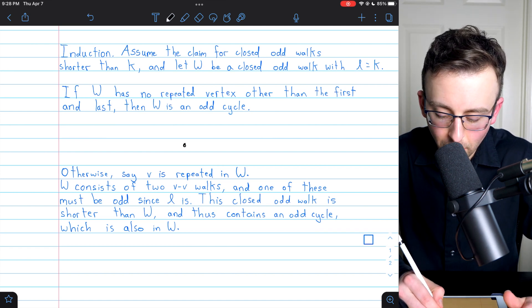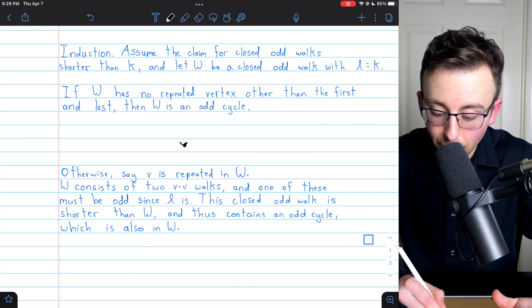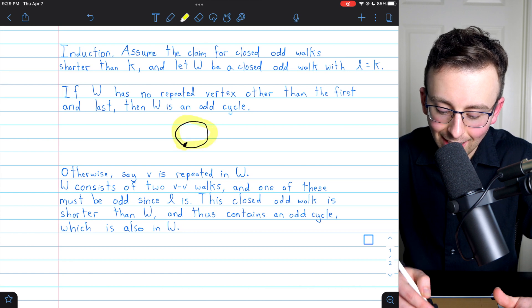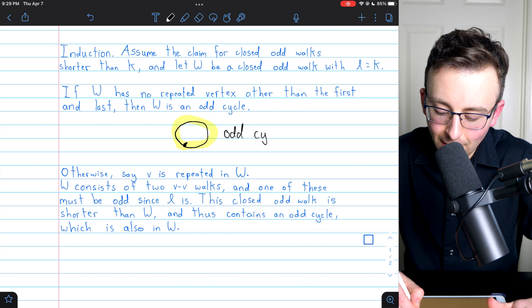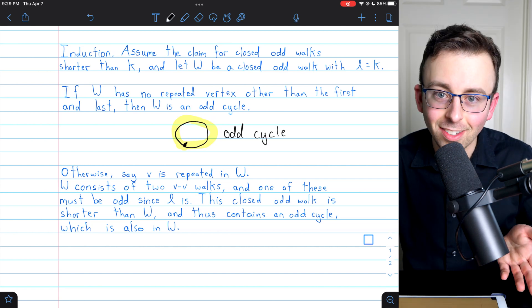So if our closed odd walk W has this starting vertex and that's the only vertex that is repeated, then W looks something like this and is itself an odd cycle. And we'd be done. It has an odd cycle because it is an odd cycle.